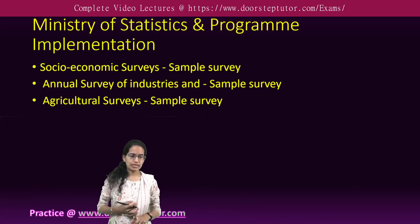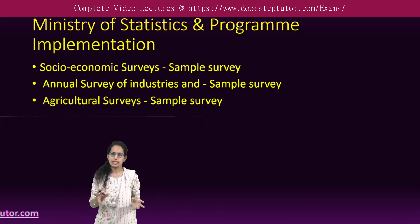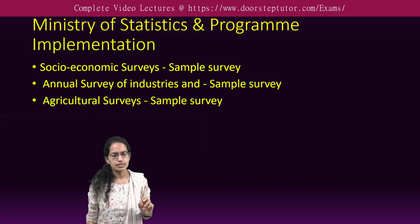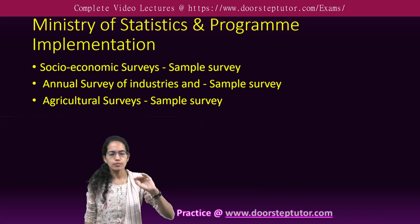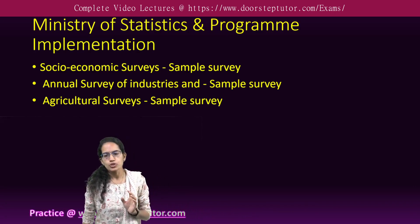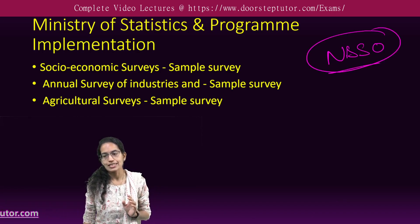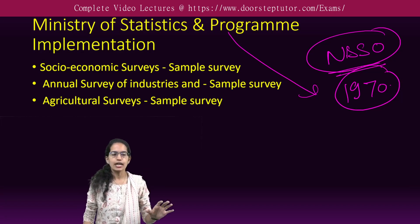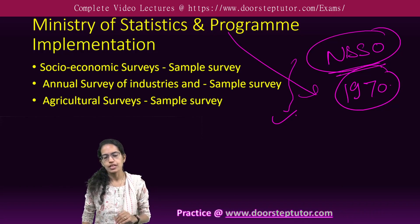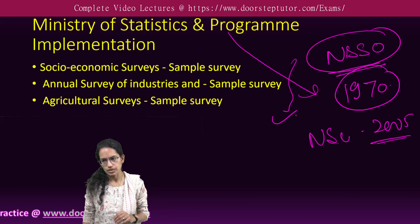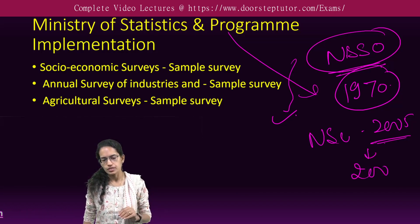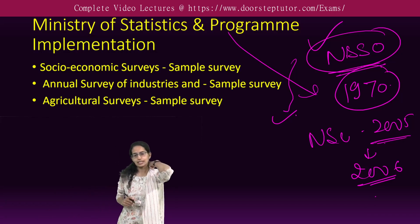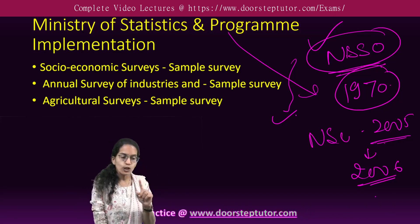The Ministry of Statistics and Program Implementation has three important surveys — all sample surveys: the Socioeconomic Survey, the Annual Survey of Industries, and the Agriculture Survey. The National Sample Survey Organization (NSSO), established in 1970 under this ministry, conducts these surveys. These surveys have been carried out under recommendations of the National Statistical Commission, established in 2005, which gave recommendations in 2006 to coordinate and conduct the various activities under NSSO.